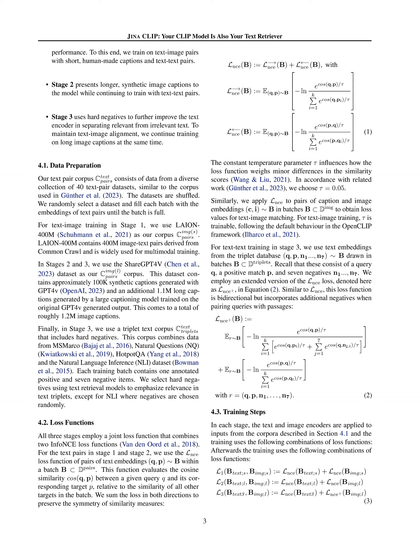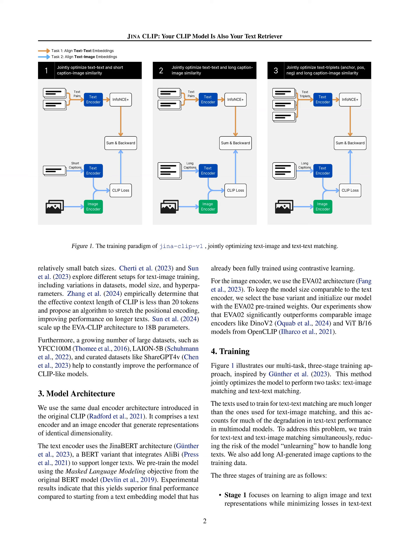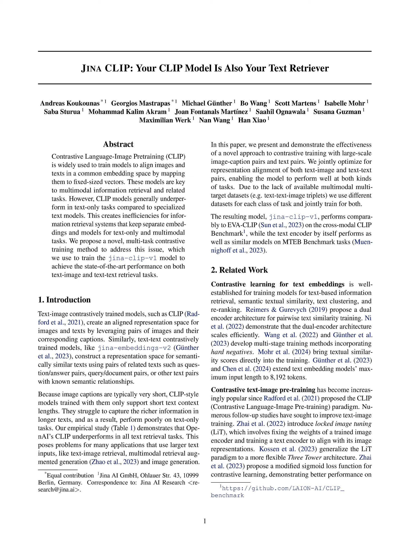Stage three also involves training on long image captions to maintain text-image alignment. The training approach jointly optimizes the model for text-image matching and text-text matching simultaneously, reducing the risk of unlearning how to handle long texts — a common issue in multimodal models. Long AI-generated image captions are added to enhance performance on longer texts, ensuring the model effectively handles both short and long text inputs, improving performance on text retrieval and multimodal tasks.